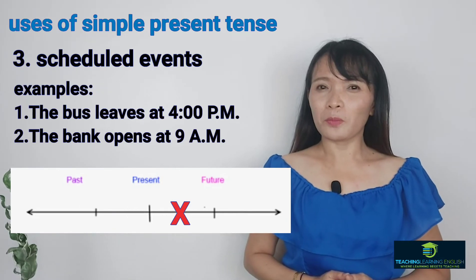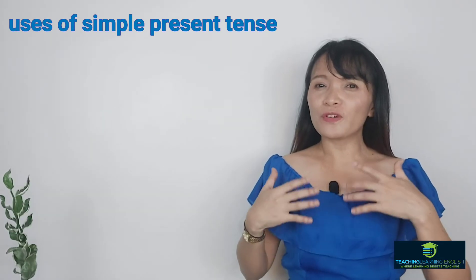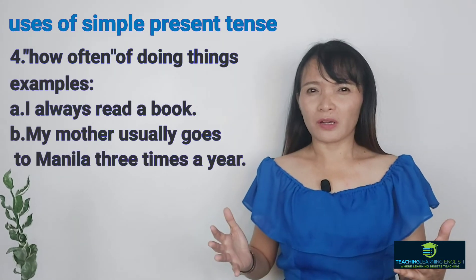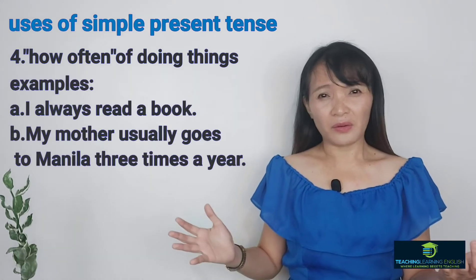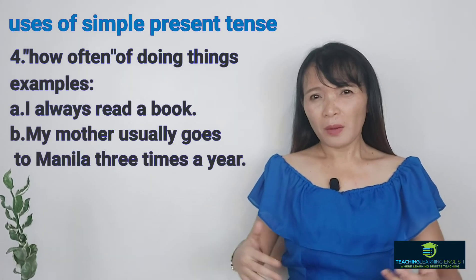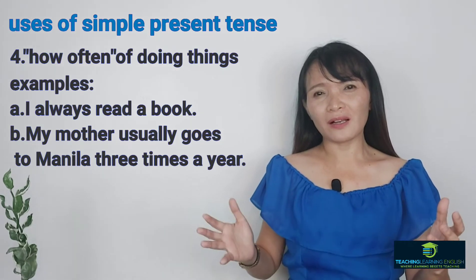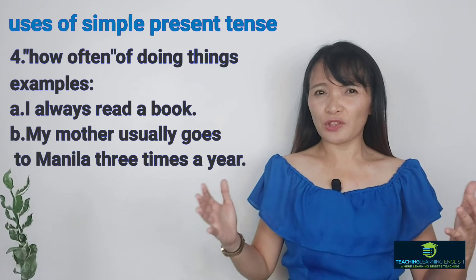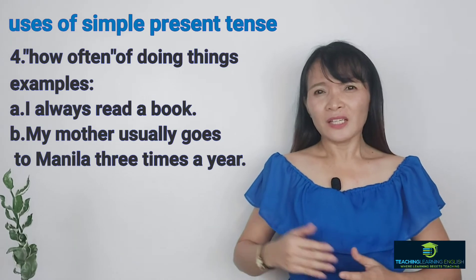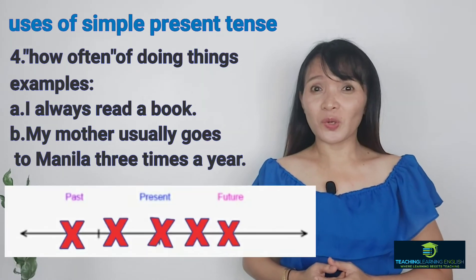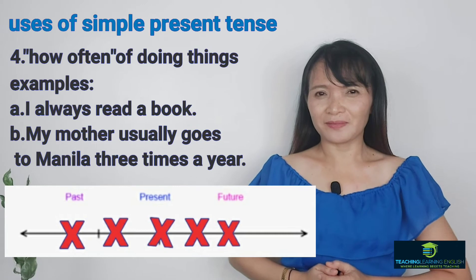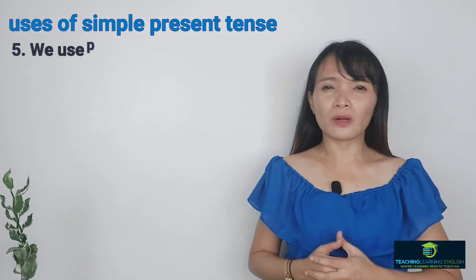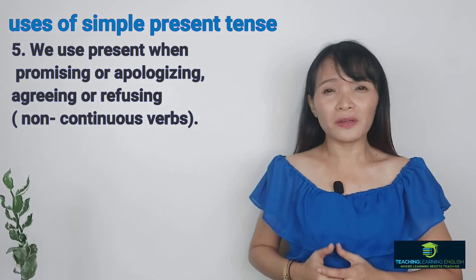We use the Simple Present Tense when talking about how often we do things. You say I always read a book — just always, no specific time. My mother usually goes to Manila three times a year — no specific date, just three times. This follows the same habits or routine timeline.